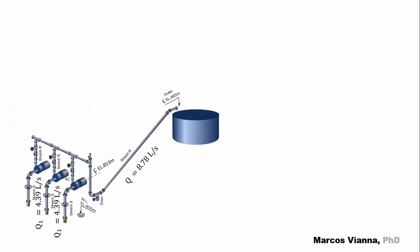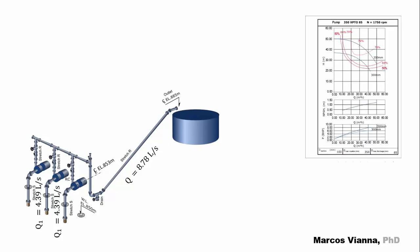Now, this is the system that we are studying: two pumps that run in parallel and a third one on standby. We know the pump chart, the total flow, and the contribution of each one of the pumps — that will be half of the total flow. For this contribution, we found that the corresponding required NPSH would be 0.65 meters.